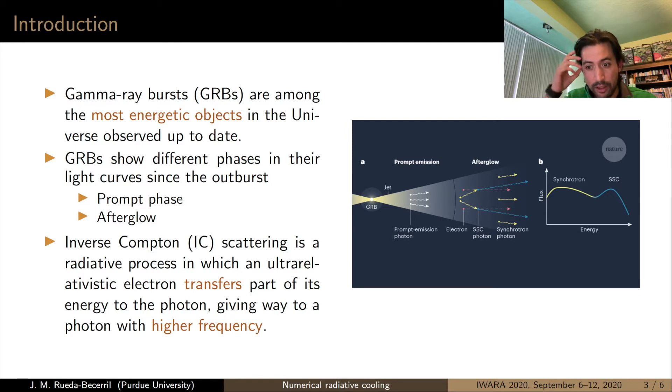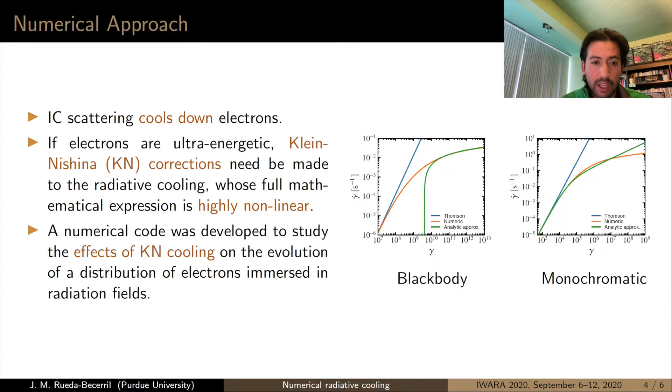It is thought that in this later stage, the afterglow, accelerated electrons interact with the photons in the surrounding medium or photons in the same outflow producing ultra high energy photons through inverse Compton scattering, transferring part of its energy to electrons affecting the distribution of them.